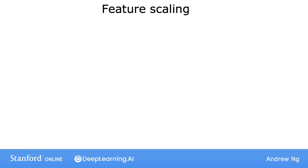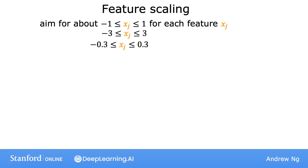As a rule of thumb, when performing feature scaling, you might want to aim for getting the features to range from maybe anywhere around negative 1 to somewhere around plus 1 for each feature x. But these values negative 1 and plus 1 can be a little bit loose. So if the features range from negative 3 to plus 3, or negative 0.3 to plus 0.3, all of these are completely okay. So if you have a feature x1 that winds up being between 0 and 3, that's not a problem. And you can rescale it if you want, but if you don't rescale it, it should work okay too.